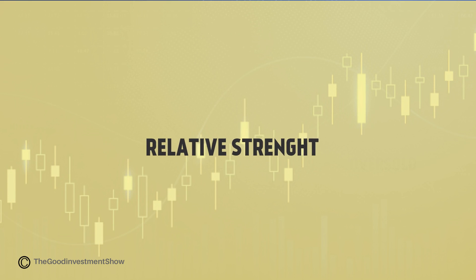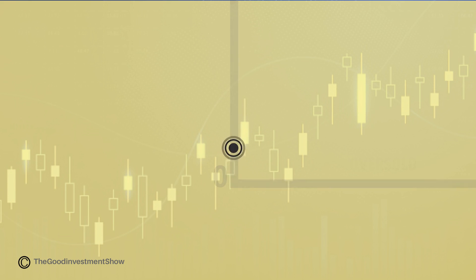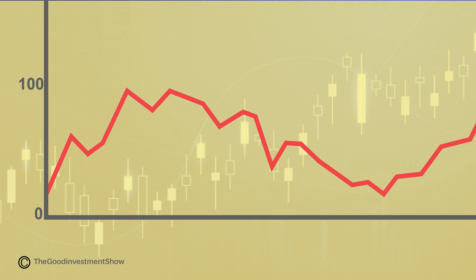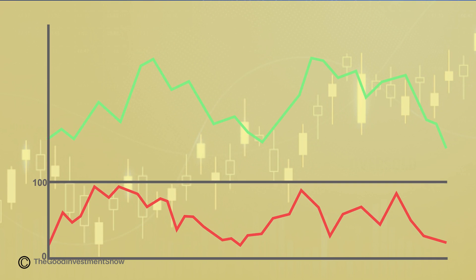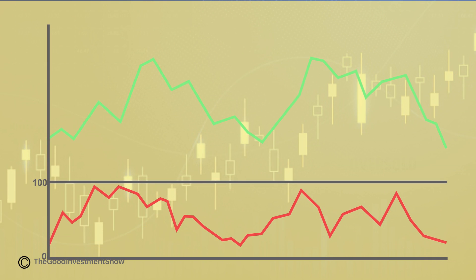The relative strength value is then plotted on a graph between 0 and 100. Plotting a line helps investors measure momentum in relative terms, which means looking at the indicator's current value in relation to past values.